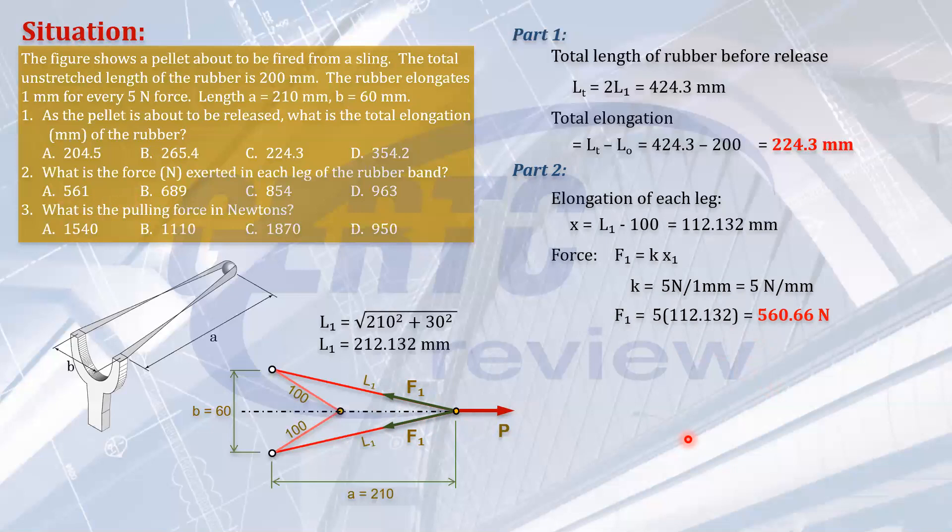And finally, what is the pulling force? Of course, that will be the effect of the 2F1. But that will not be the sum because F1 has a different direction. So we need to compute the angle here. For the third part. So we need to compute the angle. So this angle of F1 with the line of action of P.